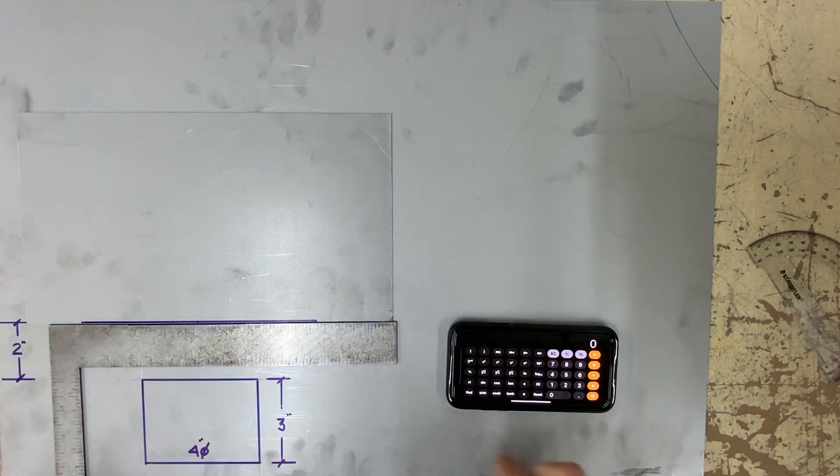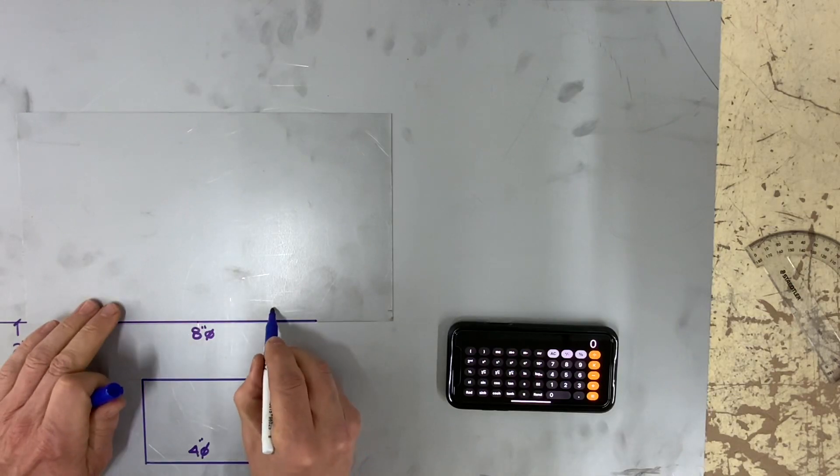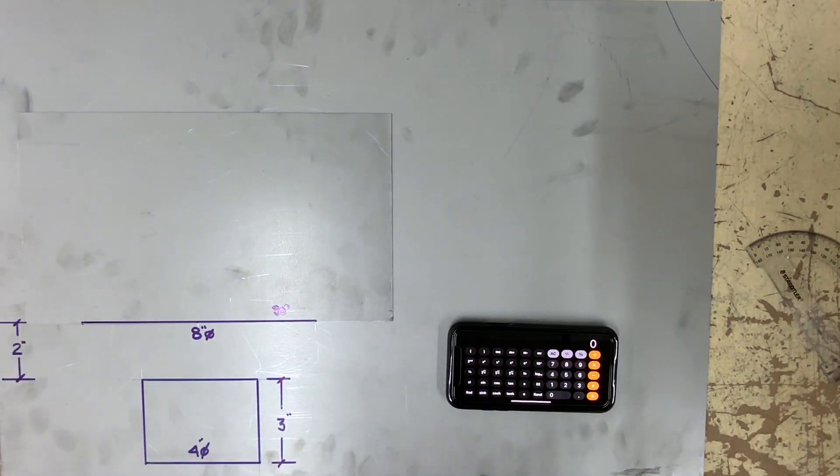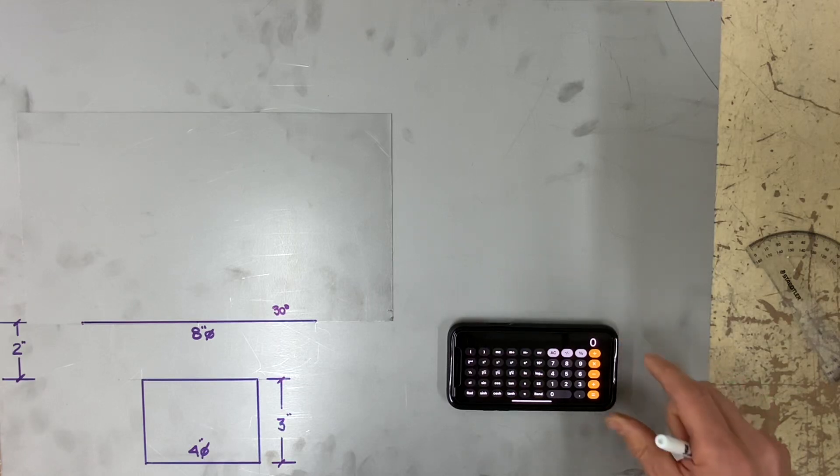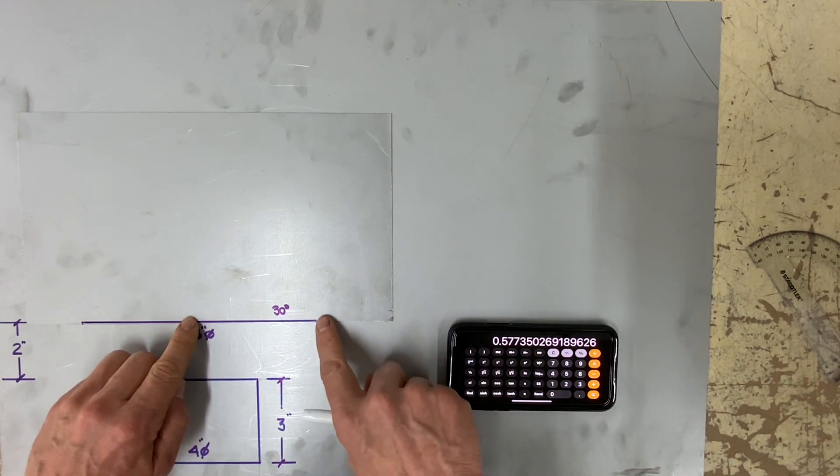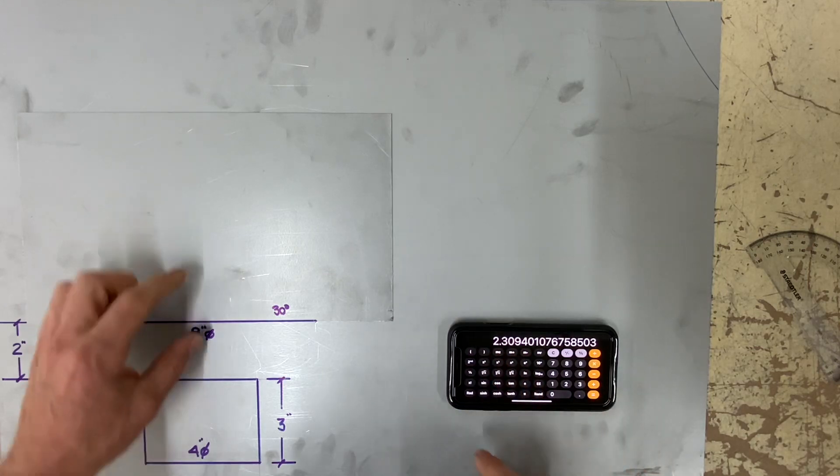Here I am going to also demonstrate another method is by using trigonometry. We know we want 30 degrees slope for the top cap. So what I've done here is I've said tangent 30 degrees times half, which is four, equals 2.309.